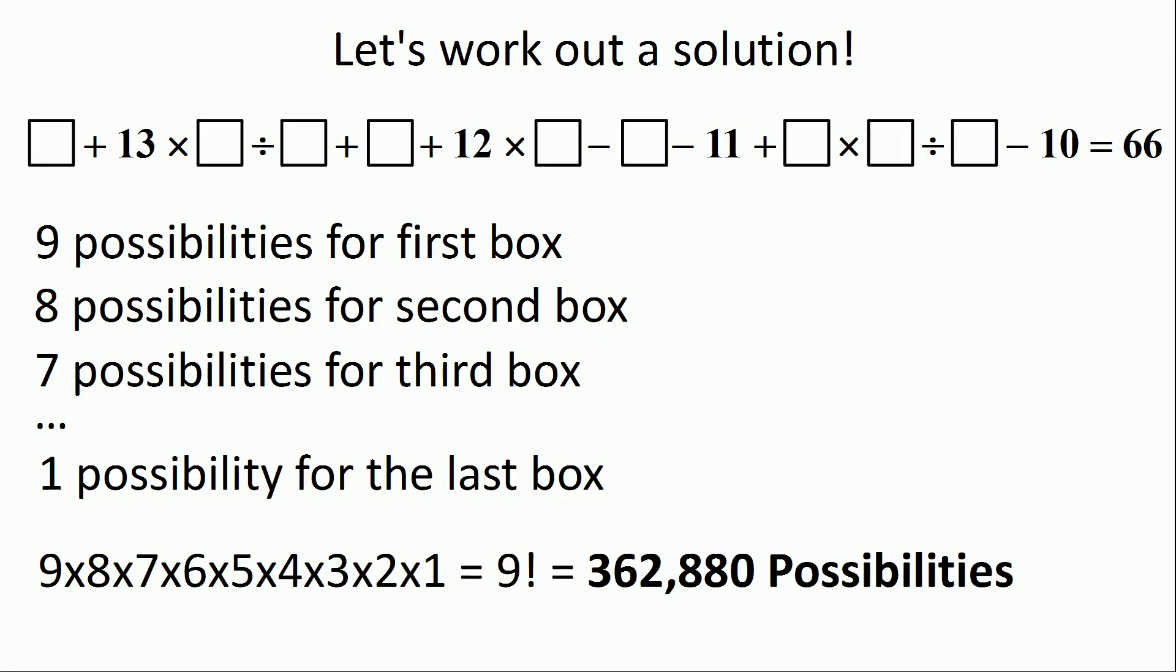In total, there are 9 factorial, or 362,880 possibilities. That's a lot of possibilities to try and work through just by brute force, and therefore we're not going to figure out a solution just by simply guessing and checking every single possibility.